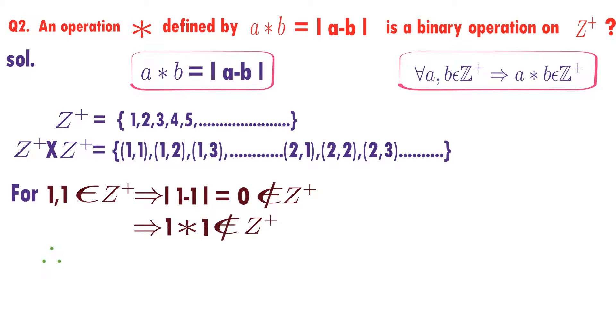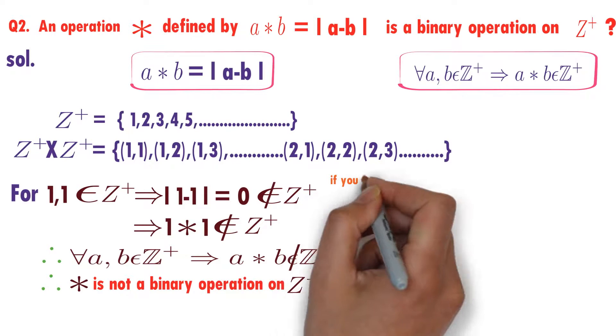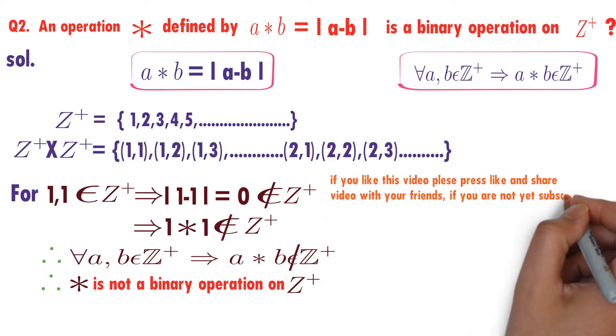It means that for every a, b belongs to Z plus, a star b does not belong to Z plus. Therefore star is not a binary operation on Z plus when star is defined by a star b equals modulus of a minus b.